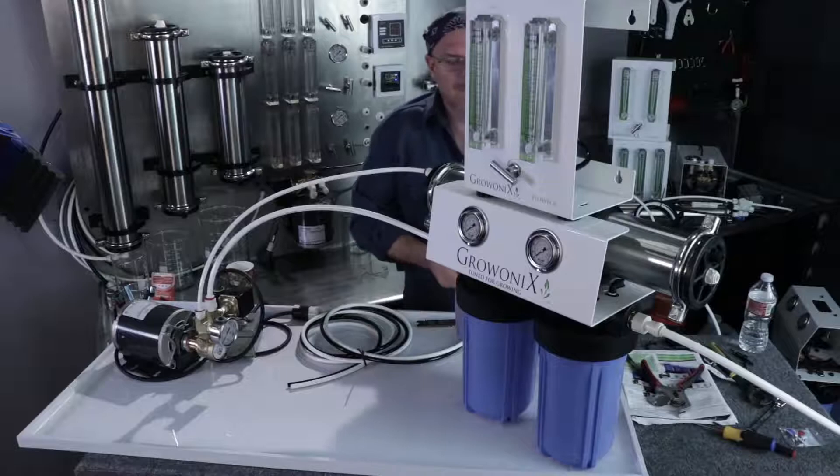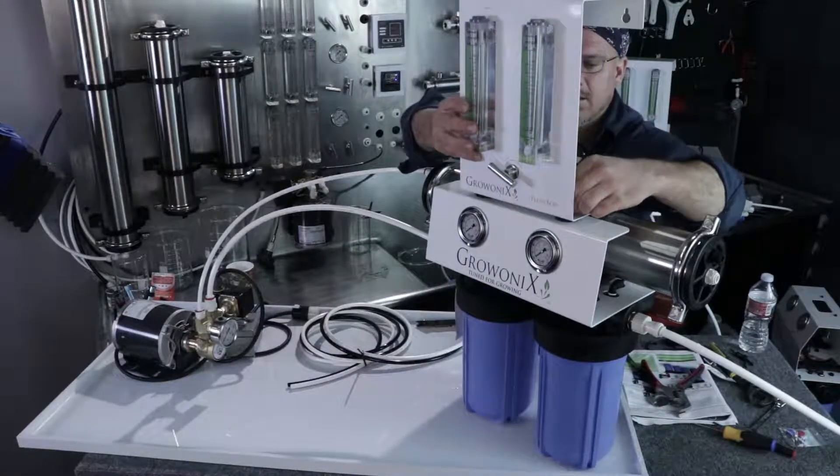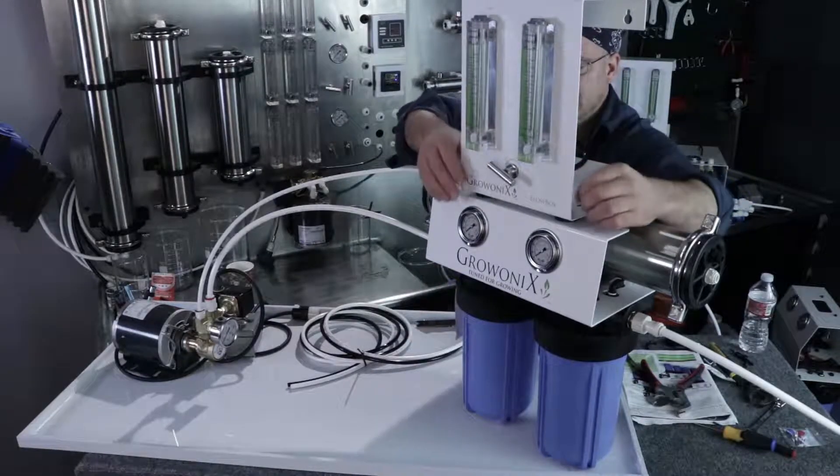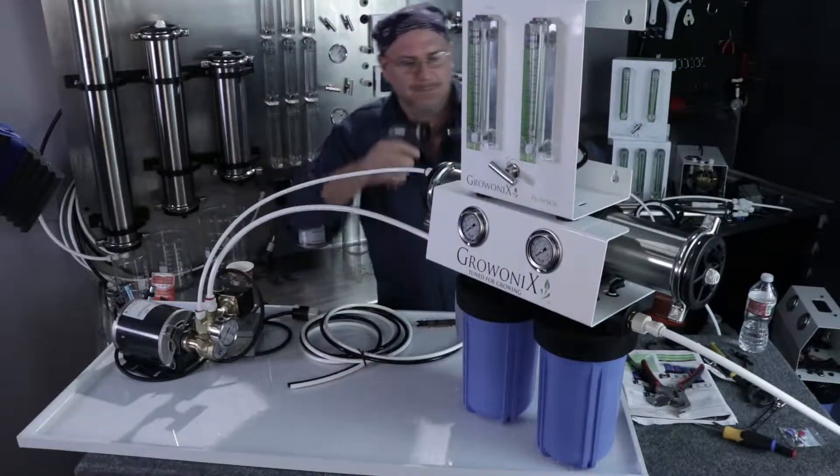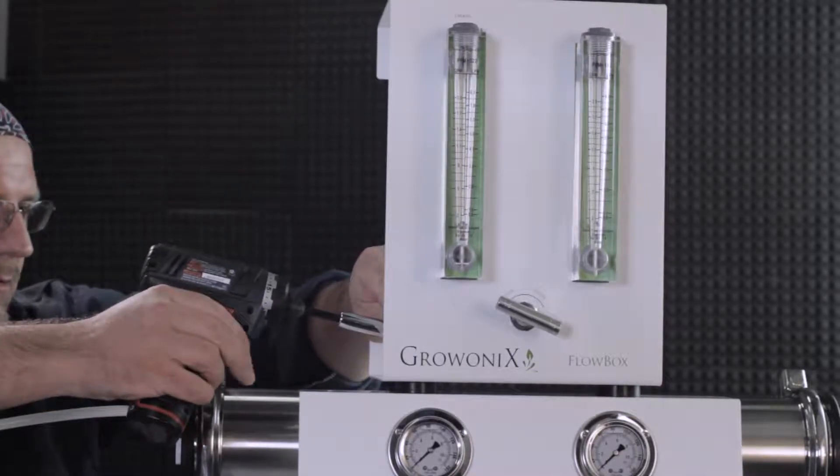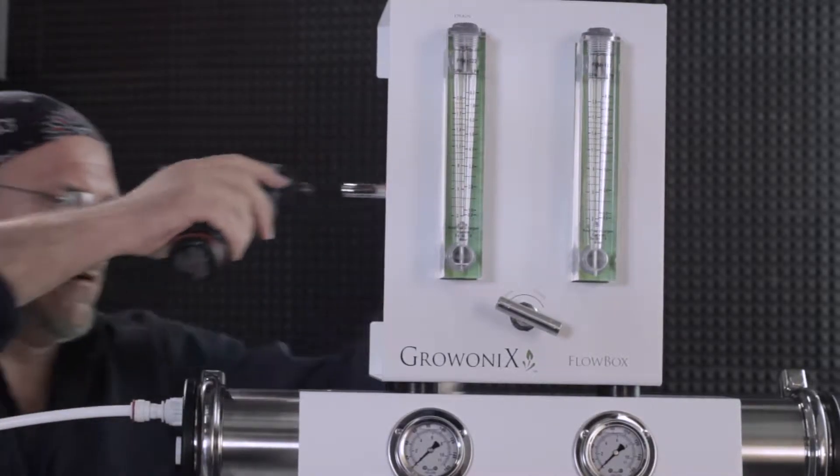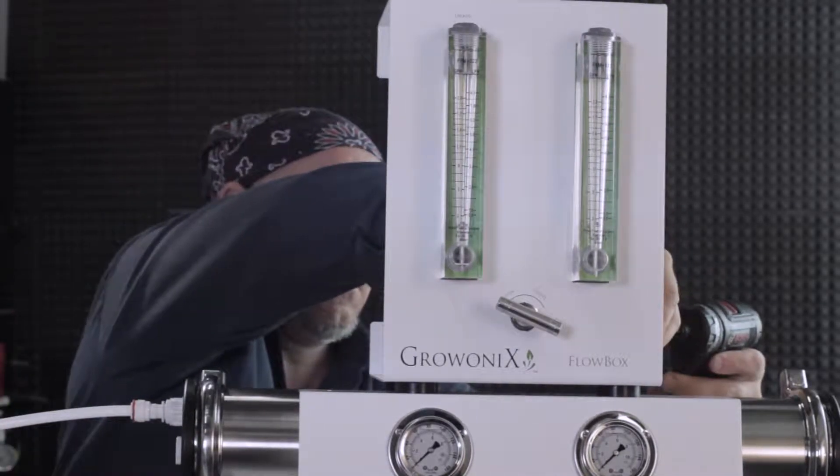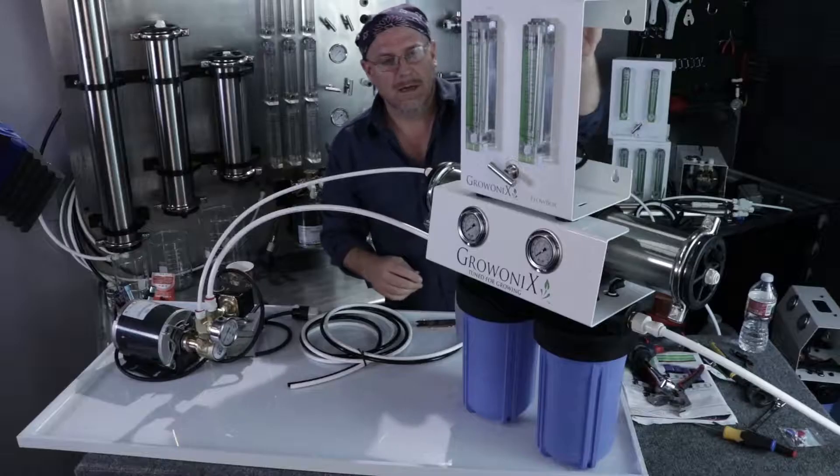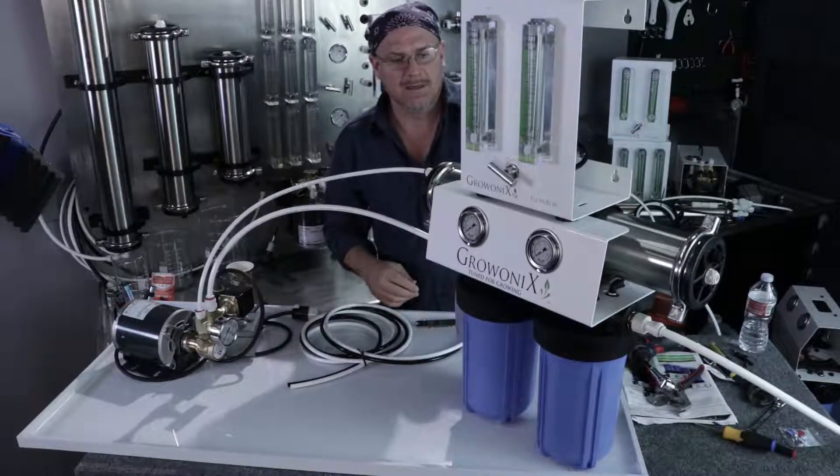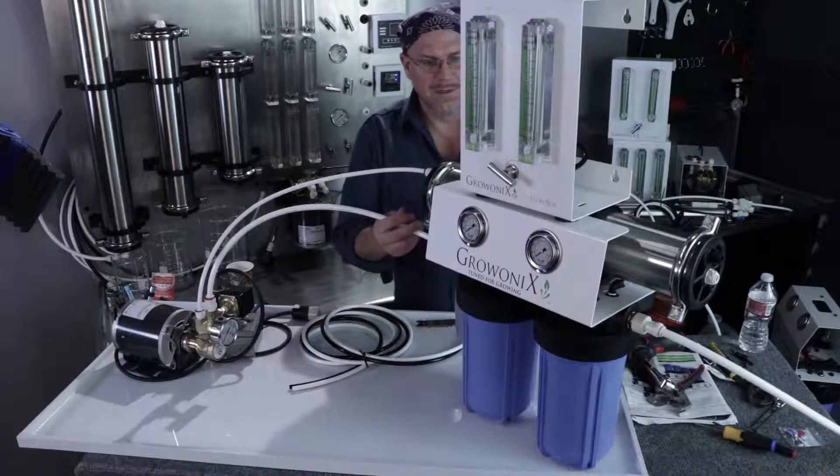And just put them through and thread them in. Really simple. I'll do this side. I'll just line up the front. Give a little turn. And that's about it for mounting a flow box. Super simple.